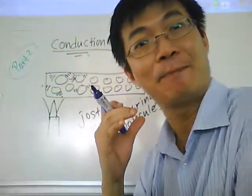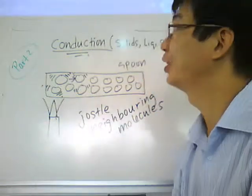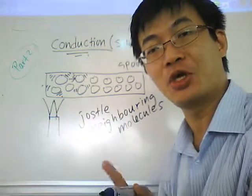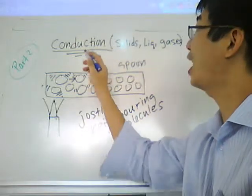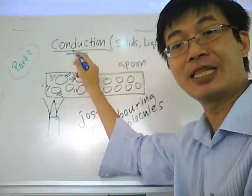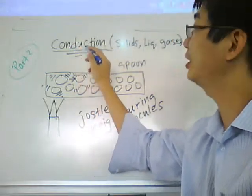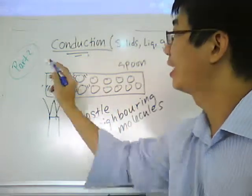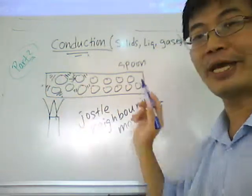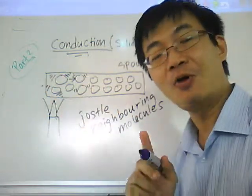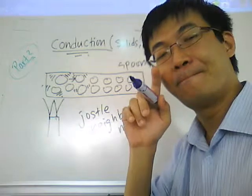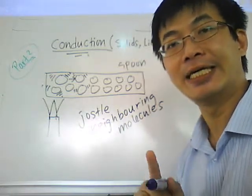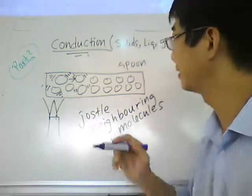Welcome back to conduction part 2. We have used molecules to explain how thermal conduction and heat conduction take place. Now in part 2, we're going to explain how come metal is a better heat conductor than plastic.